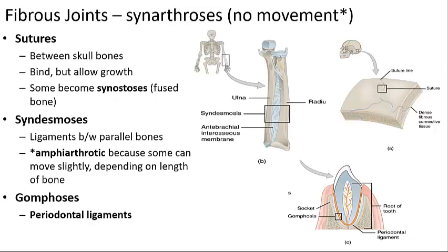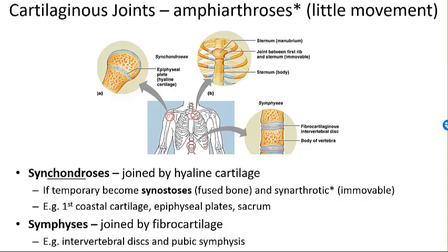Gomphoses are a synarthrotic joint also known as a peg-and-socket joint. This type of joint is found in the maxilla and mandible around the jaw area, where the teeth are fixed securely in the sockets of the alveolar margins. The fibrous connective tissue between the tooth and the socket is called the periodontal ligament.